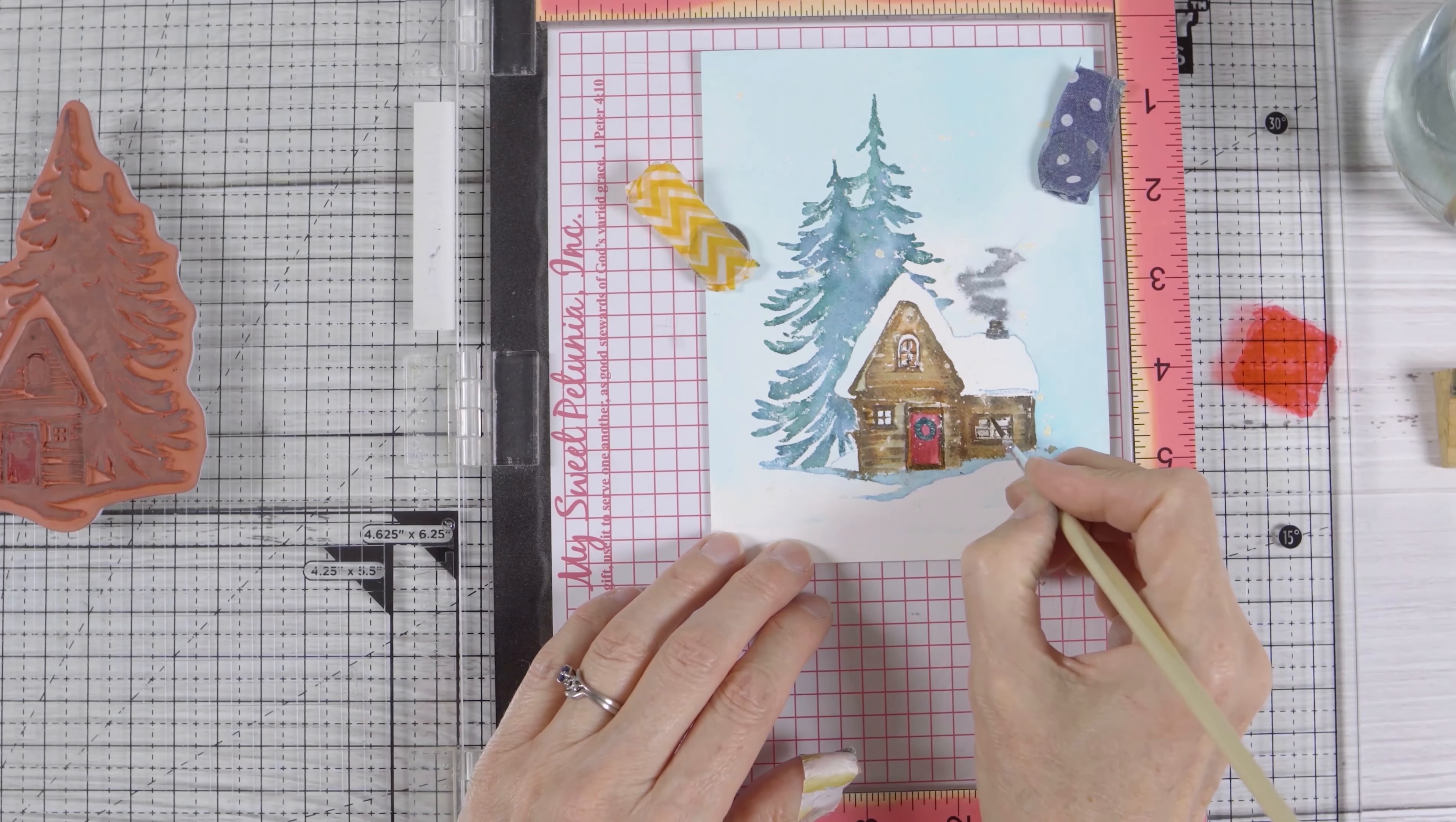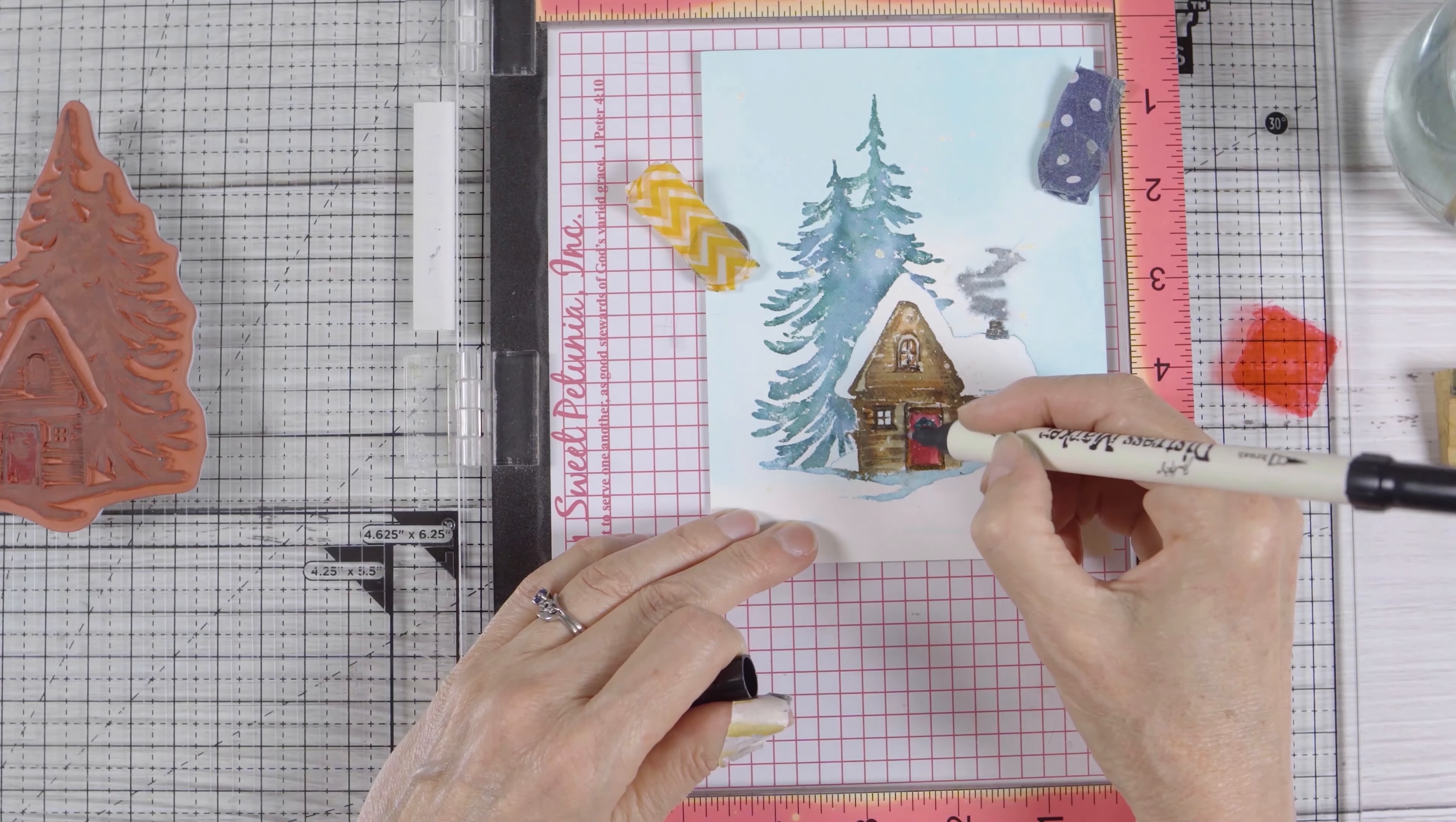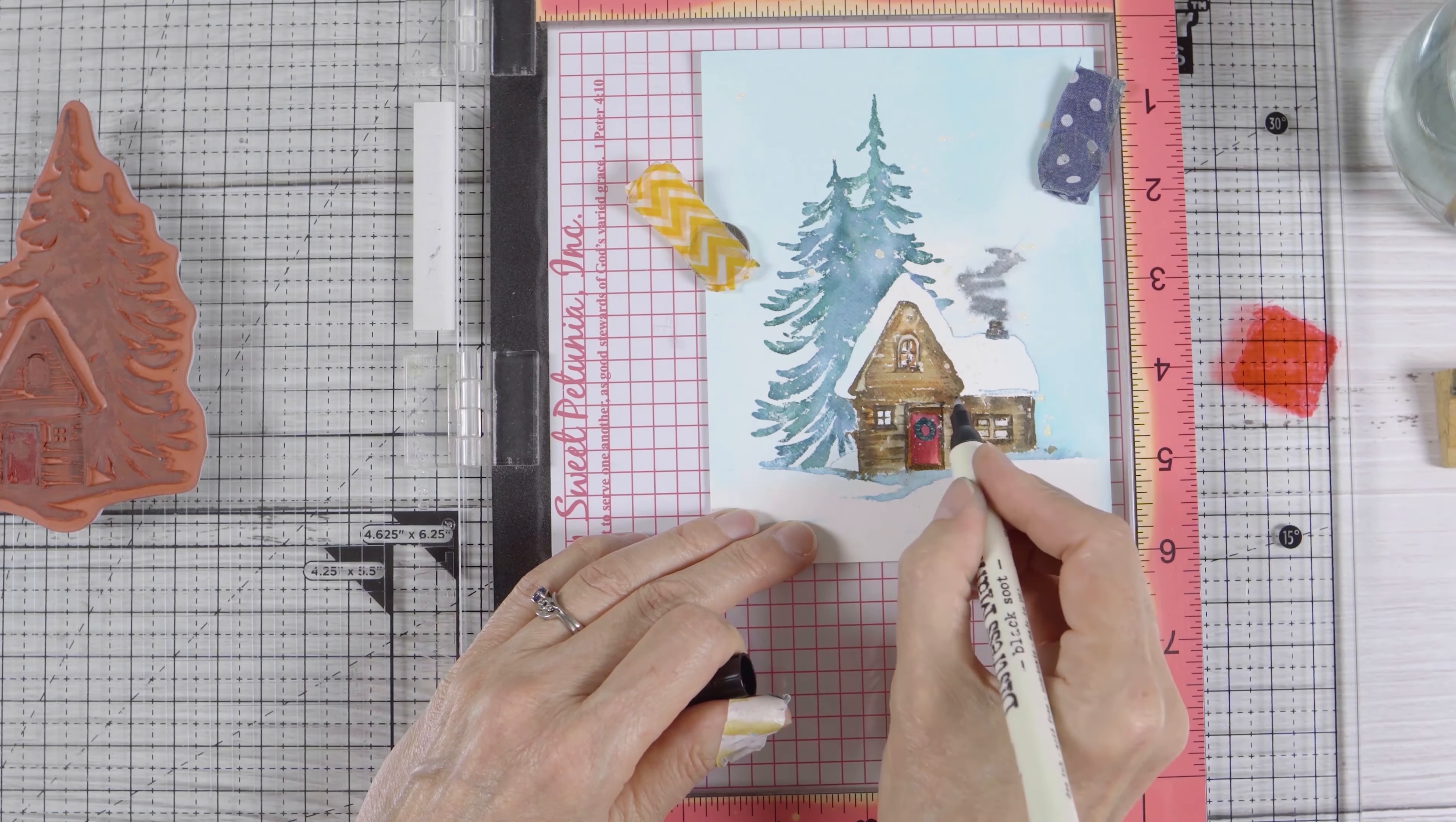I'm adding more color to the frames of the windows both by blending what's there and using the bullet tip of the black soot marker, and outlining the frame of the door as well. As I said before, you could do this with a marker or paint brush, or you can do this with repeat stamping. Either way, you'll just build up color and detail on your stamped image.